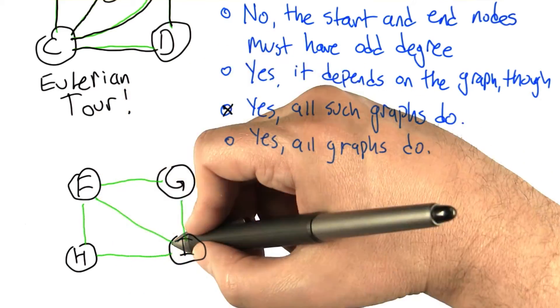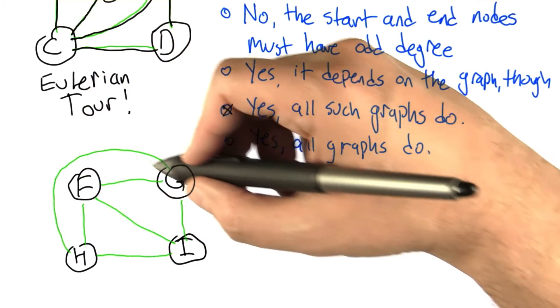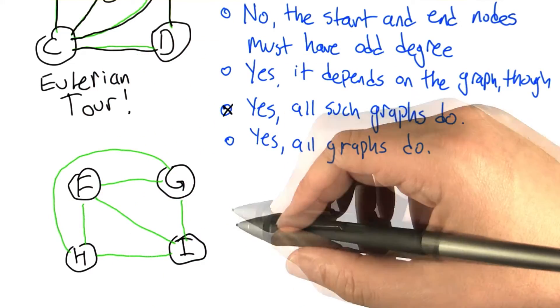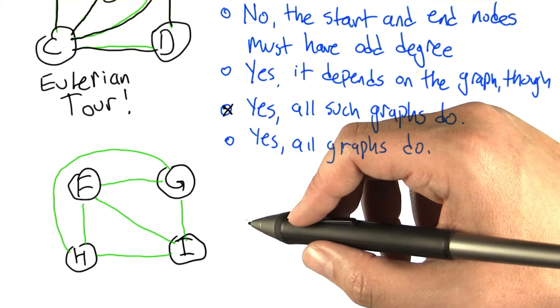And let's make it so that each of them has odd degree. Okay, now they all have even degree. Now two of them have odd degree. And if we connect these two guys, then they have odd degree as well. So all the nodes have odd degree. It's not just 0 or 2.